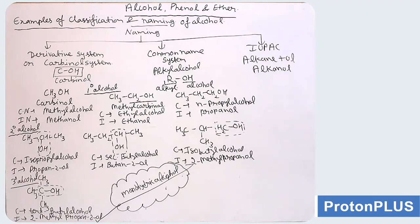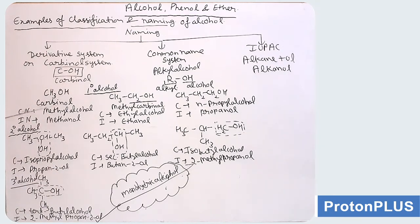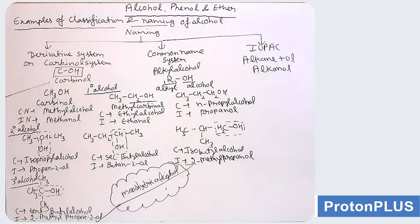We will take some examples. First, CH3OH: in the derivative system it is carbinol; common name is methyl alcohol; IUPAC is methanol. Second, two carbon atoms: common name is ethyl alcohol; IUPAC is ethanol; in the carbinol system it is methyl carbinol. Next, a three-carbon chain: common name is N-propyl alcohol; IUPAC is propan-1-ol. All these examples are of primary (one-degree) alcohol, as the alcoholic carbon atom is directly bonded to only one carbon.